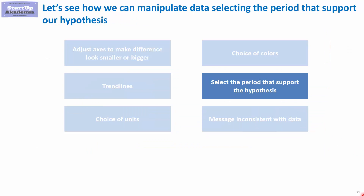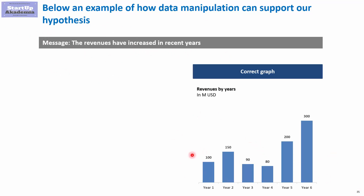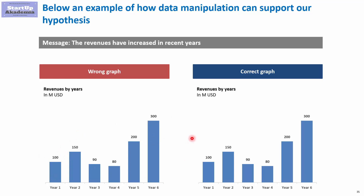Quite often you don't actually have to impact the charts directly — you can be more subtle. One way to do that is simply to select the period that supports the hypothesis. In our example, we want to show that revenues have increased in recent years, but the full data shows revenue going up from year one to two, then down, then up again — suggesting seasonality or occasional problems. This is not consistent with the message we want to convey. So instead of looking at all six years, we just look at the last three. With this curated data limited to the last three years, you see a huge growth.